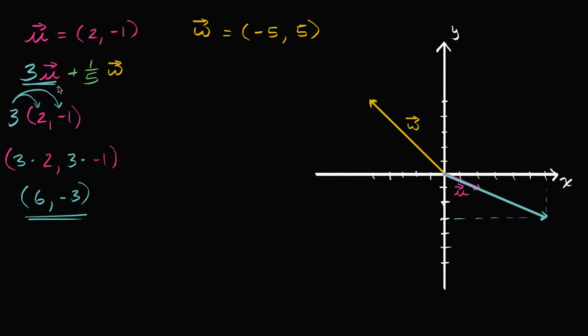Notice it's in the exact same direction as vector u — it just has three times the magnitude. That's vector u, that would be two u, and then we get to three u — three times the magnitude.